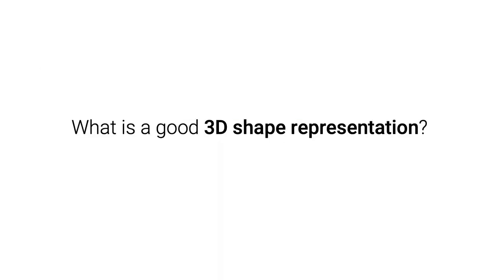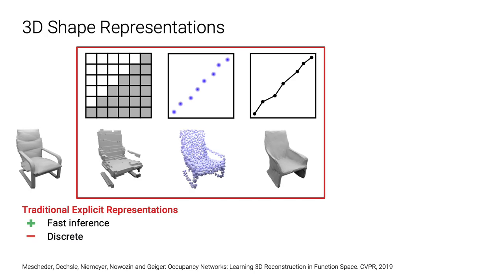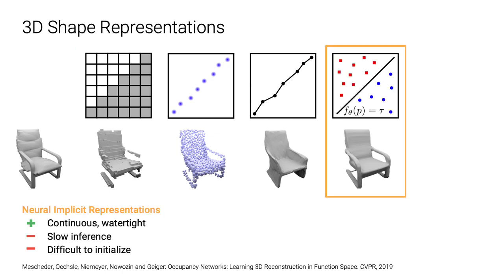What is a good 3D shape representation? This is an increasingly important question, especially in the era of deep learning. Traditional 3D reconstruction methods use representations like voxels, point clouds, or meshes. These representations are well studied and usually very efficient during inference. However, they all to some extent suffer from discretization. In contrast, neuroimplicit representations — for example, occupancy networks — represent a surface implicitly as the decision boundary of a neural network classifier.